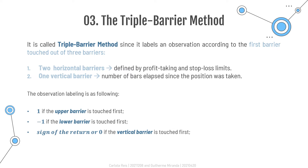If the upper barrier is touched first, the observation is labeled as 1. If the lower barrier is touched first, then the observation is labeled as minus 1. Lastly, if the vertical barrier is touched first, there are two choices: the sign of the return or a 0.